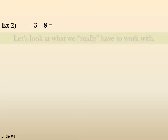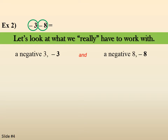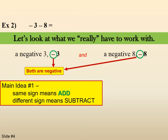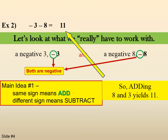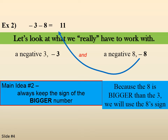Negative 3 minus 8. Let's look at the numbers. We have a negative 3 and a negative 8. Every number has a sign — it's always in front. The 3 is negative, the 8 is negative. They're both negative, which means they're the same sign. So we're going to add the numbers together: 8 and 3 gives us 11. Now we keep the sign of the bigger number. The 8 is bigger than the 3, so we use the 8's sign, which gives us negative 11 for our answer.